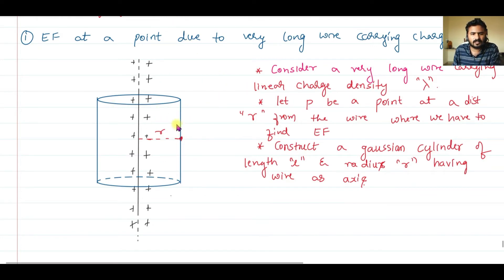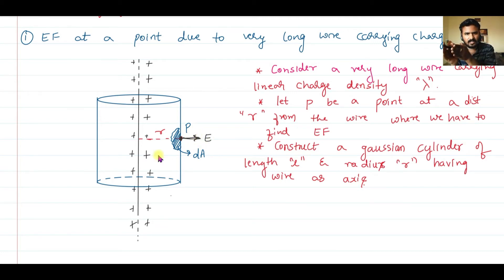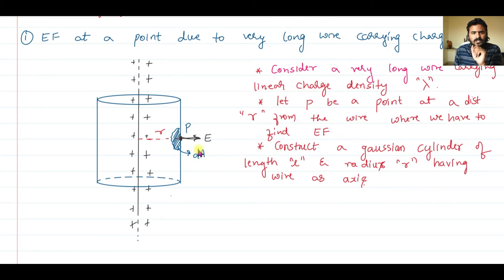I have considered a Gaussian cylinder of radius r having the wire as axis. Point P is on the curved surface where I need to find the electric field. Let us also consider a small area dA in that region. The electric field at a distance r is radially outwards because this is a positively charged wire. The electric field E at distance r from the wire passes through the small area dA.